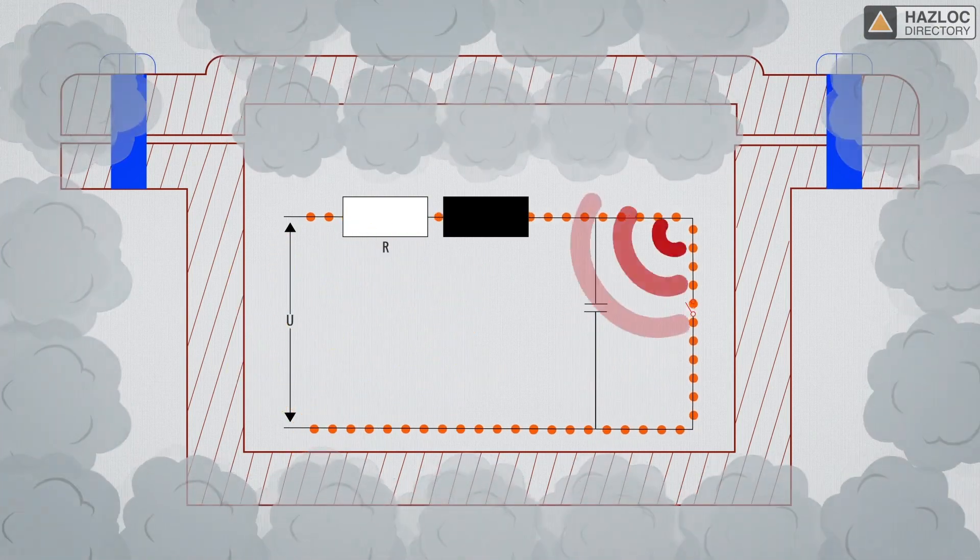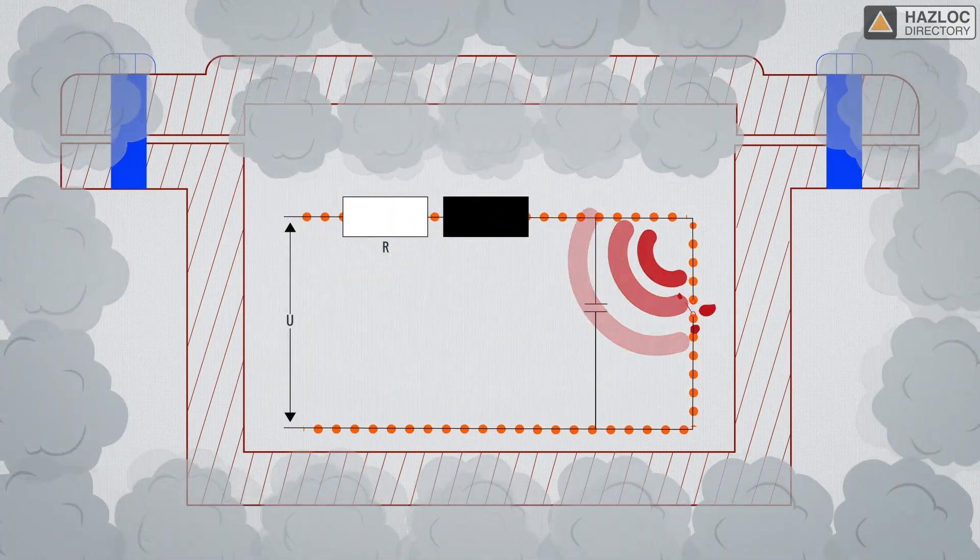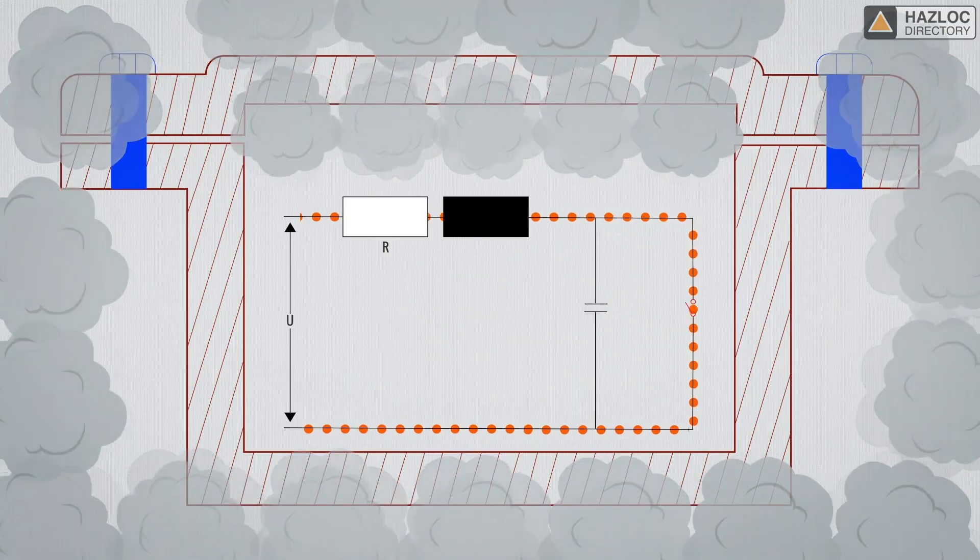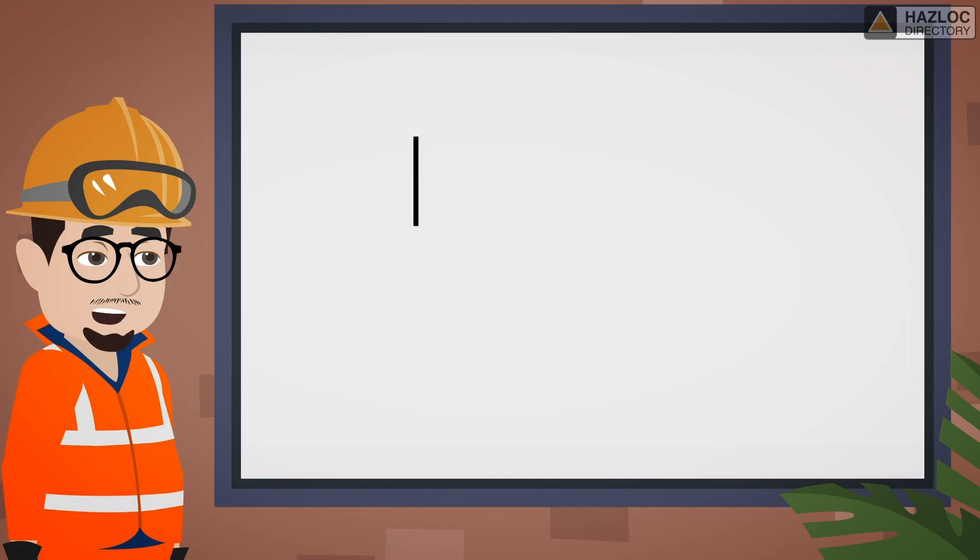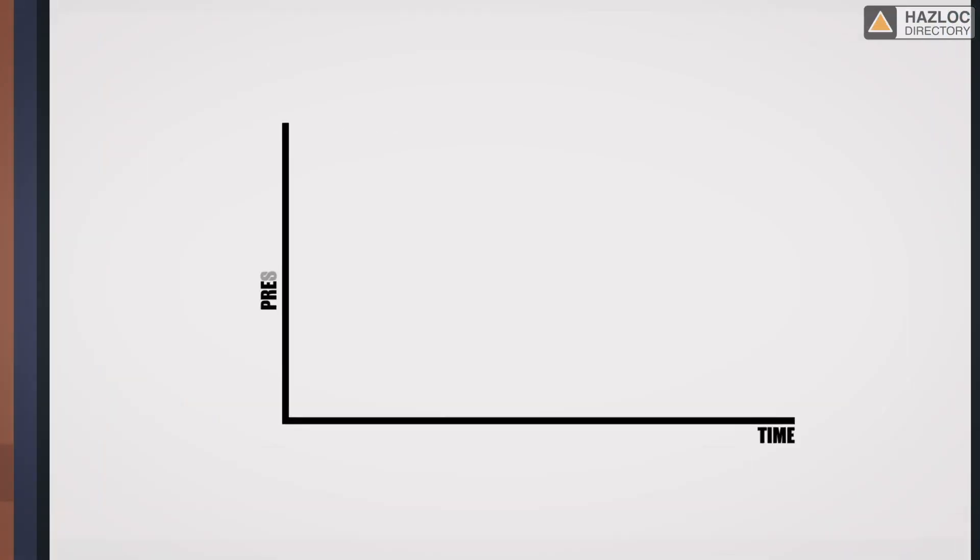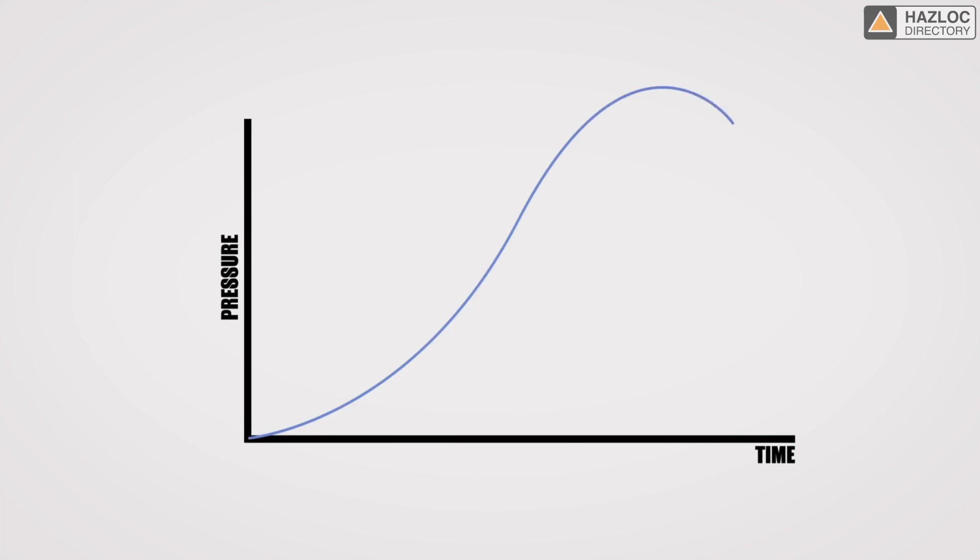Pressure is one of the expected outcomes whenever there is an explosion. When there is an explosion inside an enclosure, pressure rises inside it and enclosures must be designed to withstand such pressure. This pressure rise can be predicted and its rise can be plotted on a graph such as this. This graph illustrates three important characteristics related to the pressure.